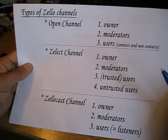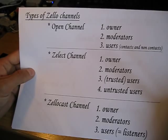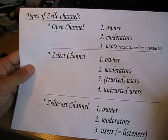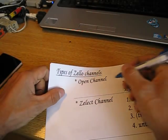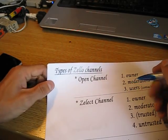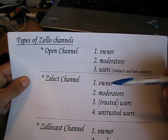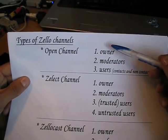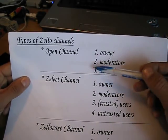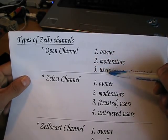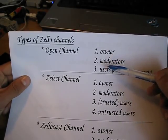The type of channel also affects how long people can talk. In an open channel, everybody has full floor talk rights. If somebody keys up — whether owner, moderator, or user — nobody else can key on top of them. Even if a user keys up for half an hour, even a moderator or the owner cannot interrupt the current transmission.